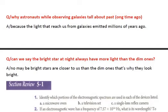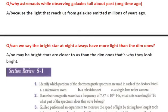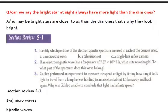Another question says: can we say bright stars at night always have more light than the dim ones? So if you look at the sky at night, we can see some stars are brighter than others. That does not mean the bright star has more light. As the answer says, no - maybe the star is closer to us than the dim ones, that's why they look bright. So if the star is closer to us its light will be bright; if it's far from us its light will be dim, but that does not mean that star has dim light.